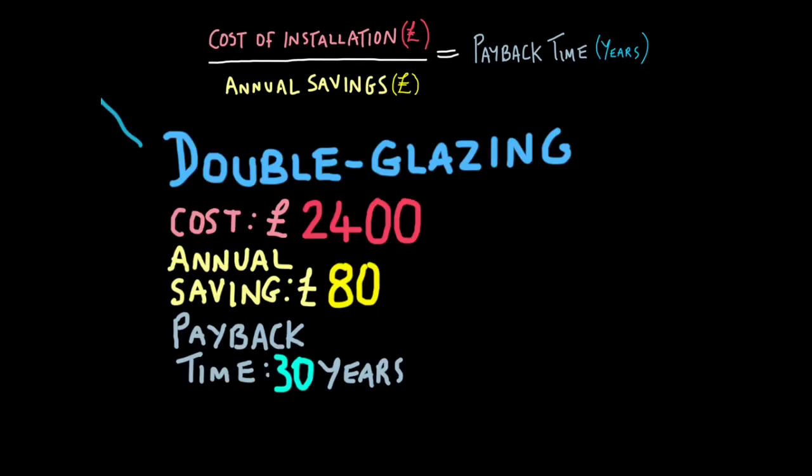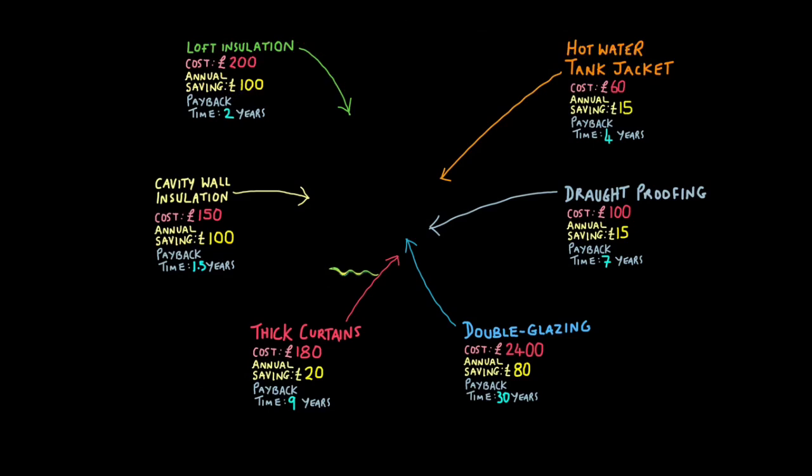Let's look at one more example. Double glazing, as it's very common, the cost is £2,400. That's very expensive. And the annual savings, by contrast, are only £80. So £2,400 divided by £80 gives you a payback time of 30 years, much longer. So you can use payback time to evaluate how cost effective an energy saving strategy is. You can't deny the cost effectiveness of using loft insulation and cavity wall insulation. Whereas you might want to reconsider double glazing, as it clearly isn't as cost effective.